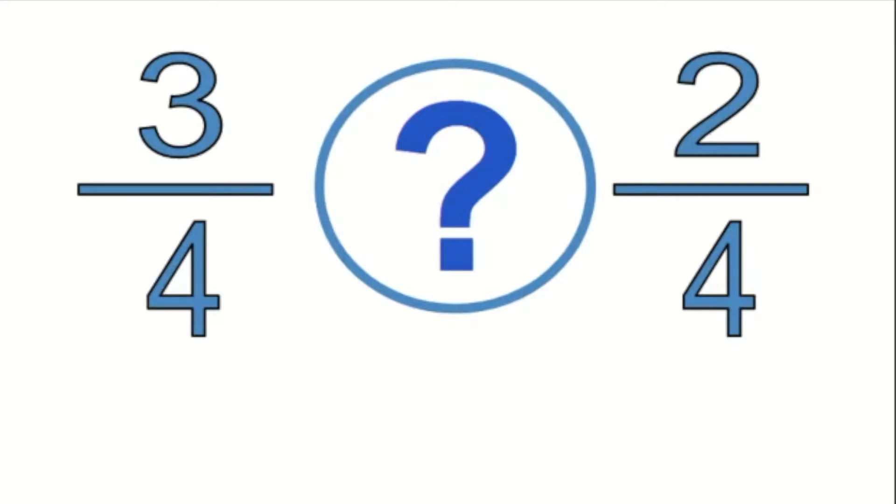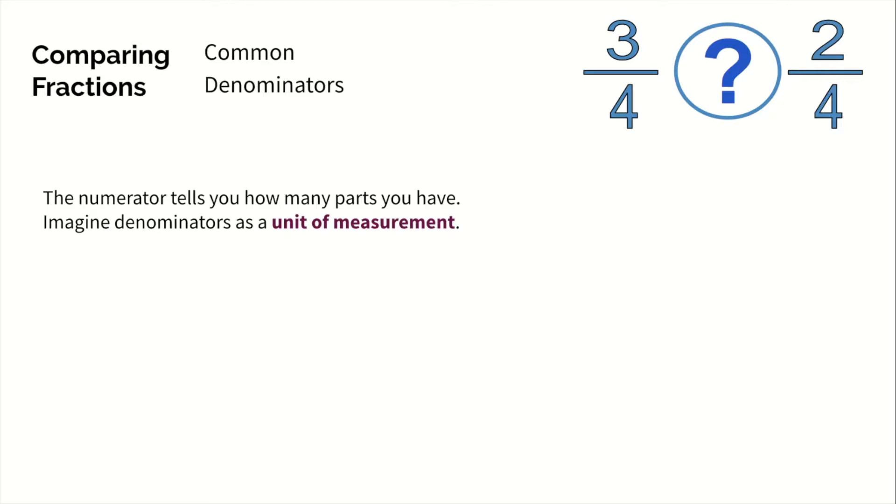Right now we have common denominators, which means both of the denominators are the same. When you have two units of measurement that are the same and you're comparing them, it's going to be easy. Which is longer, three inches or two inches? They're both inches. Which means we just need to know that three is more than two.